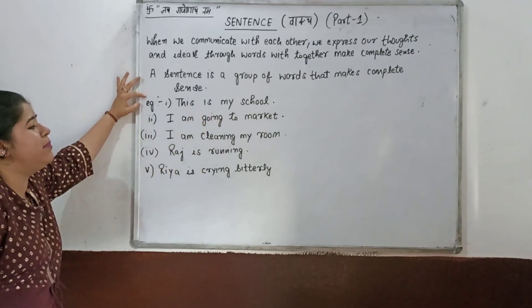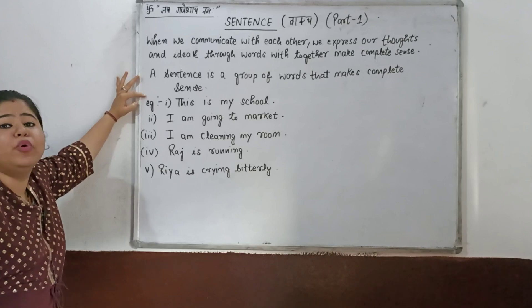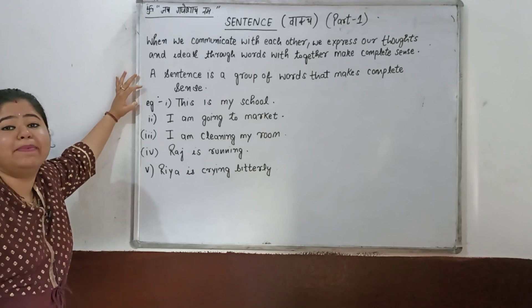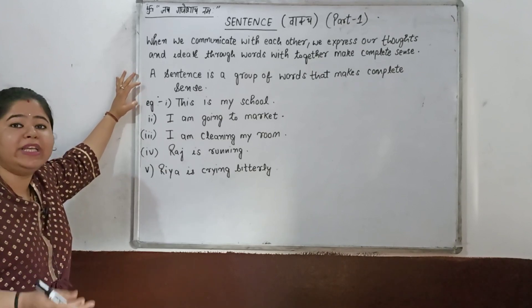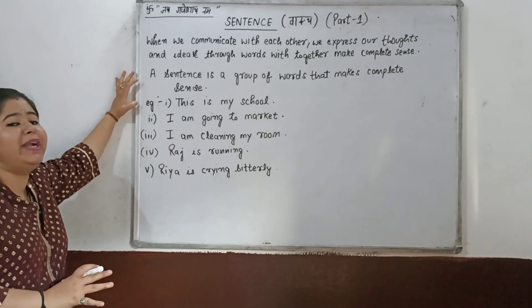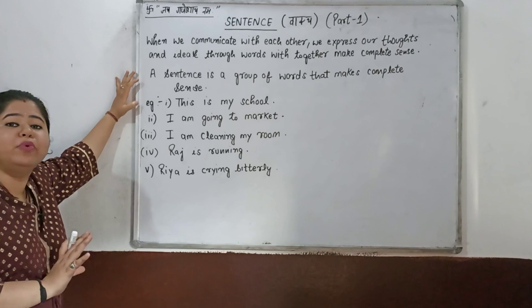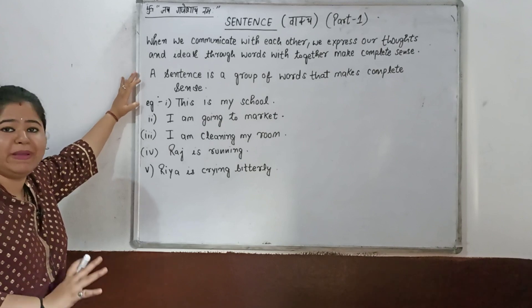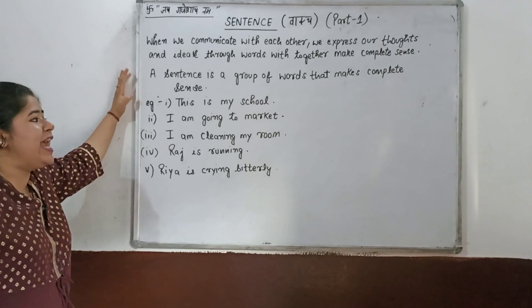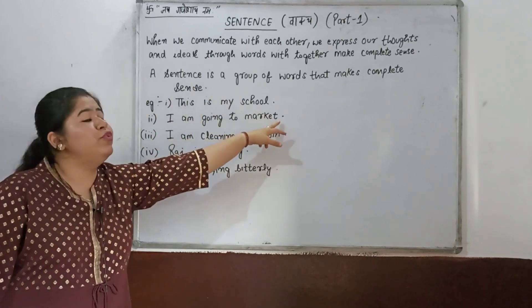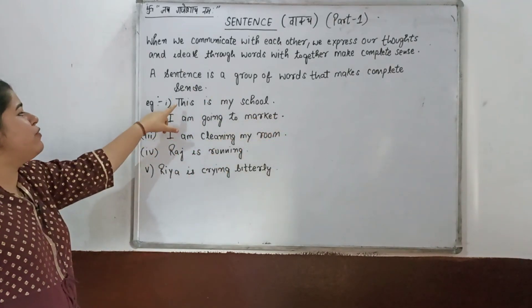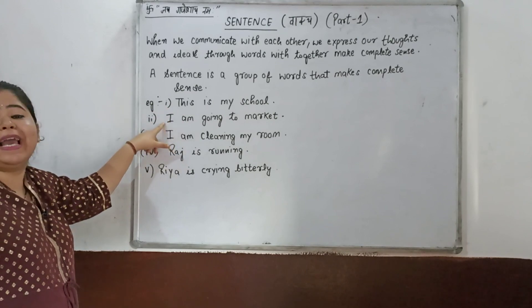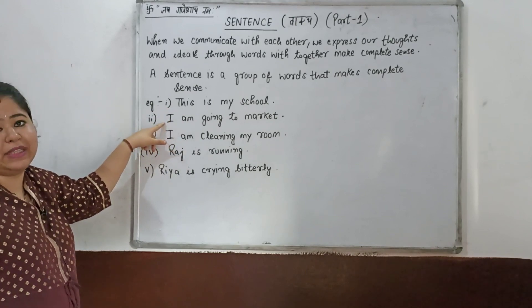We can see here: 'This is my school.' Another example: 'I am going to market.' When we reach the end of a sentence, we put a full stop. We also start a sentence with a capital letter.